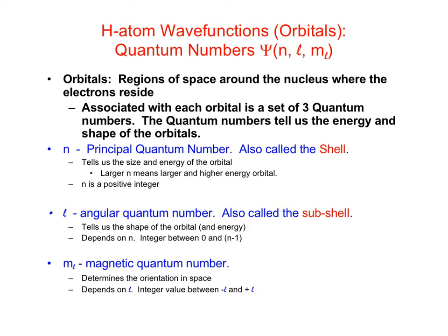More formally, the principal quantum number, also called the shell, tells us the size and energy of the orbital. The larger the value of N, the larger the orbital is and the higher in energy it is. N has to be a positive integer: 1, 2, 3, 4, 5, etc. L, the angular quantum number, also called the subshell, tells us the shape of the orbital, and the energy also depends on L, but not as much as N.